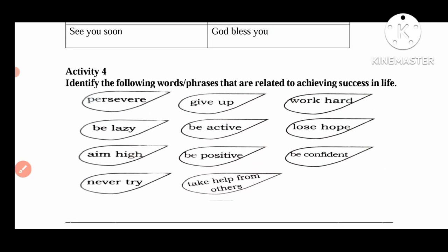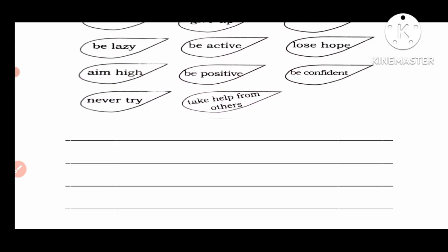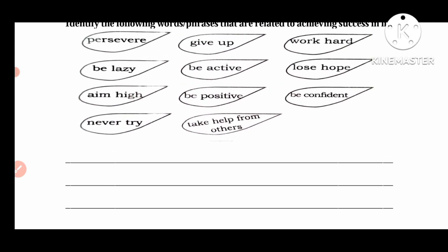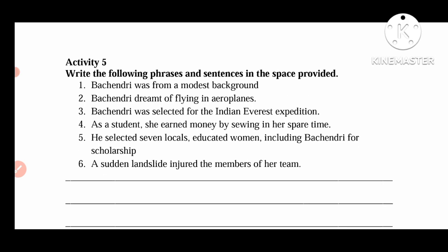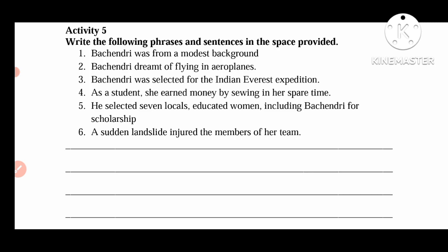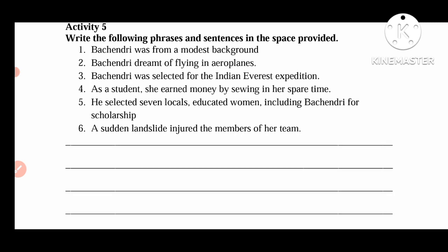Here we write those related words about success in our life in the lines provided. Next, Activity 5: write the following phrases and sentences. Phrases provided include: 'Bacchandri was from a modest background,' 'Bacchandri dreamt of flying an aeroplane,' 'Bacchandri was selected for the Indian Everest expedition.' We will read these sentences and write them. This is Activity 5.